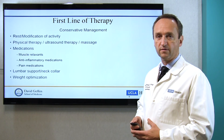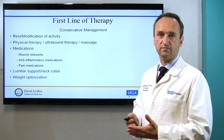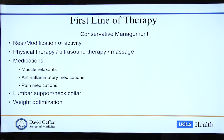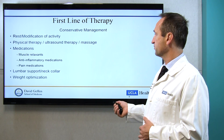What is the first line of therapy? We try to provide a truly comprehensive treatment. We always discuss conservative management first — whether rest or modification of activity can help. We try to help with physical therapy, ultrasound therapy, or massages. Medications are important: we use muscle relaxants, anti-inflammatory medications, or pain medications if needed. Lumbar support and neck collars are very appreciated by patients and help a lot. And obviously, weight optimization helps for spinal medical problems.